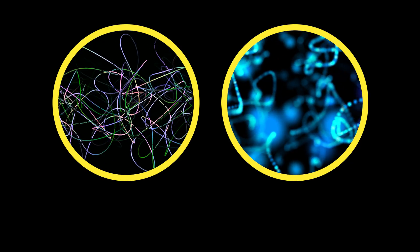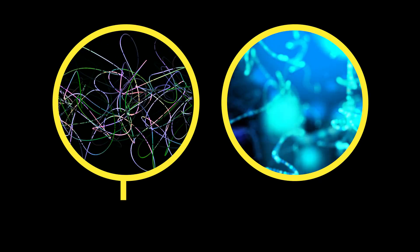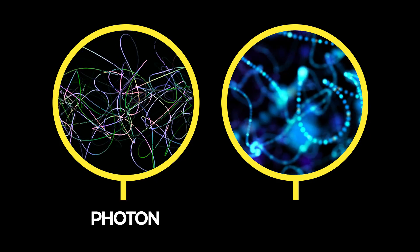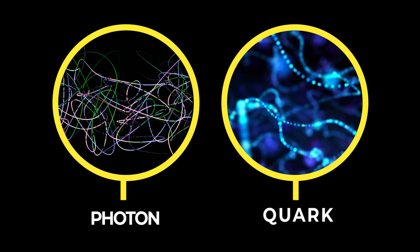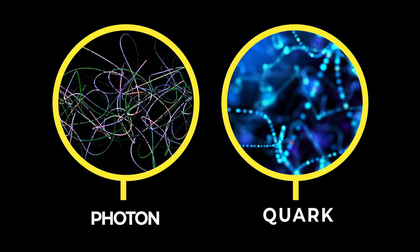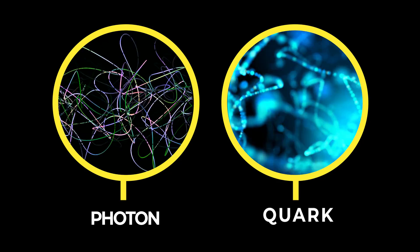For example, a string vibrating at a certain frequency can manifest itself as a photon. Another string vibrating with a different frequency can gain the properties of a quark, and so on. Everything is made up of these tiny, vibrating strings.